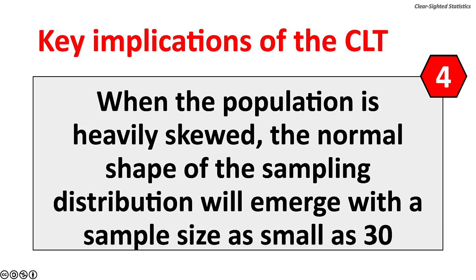Four, when the population is heavily skewed, the normal shape of the sampling distribution will emerge with a sample size as small as 30.